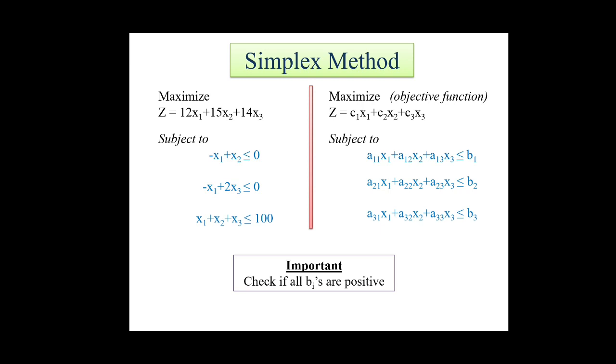If we compare this question with a standard function, you observe that c1, c2, c3 represent the coefficients of our objective function. a11, a12, a13, etc. represent the coefficients of our constraint equations. And b1, b2, b3 represent the constants on the right-hand side of the constraints.